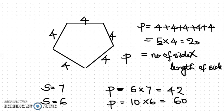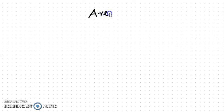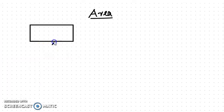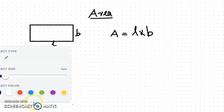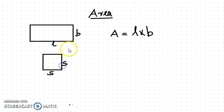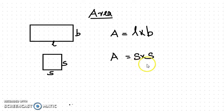Now we move to area. Area of a rectangle or square — how can we find it? In case of a rectangle, the sides are length and breadth, L and B. So area equals L times B, length into breadth. In case of a square, all sides are the same, so area equals side into side.